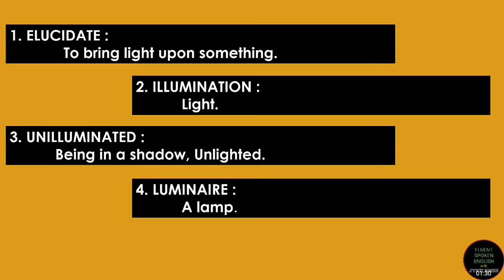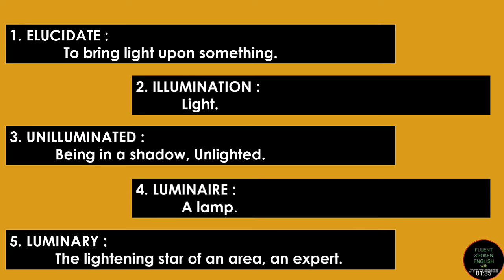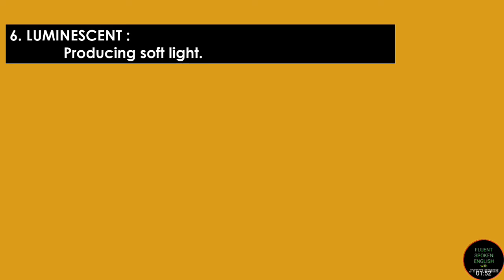'Luminaire' — a lamp is called a luminaire. 'Luminary' — the lighting star of an area or an expert is known as a luminary. Luminary does not only mean a lighting star; anybody who is an expert in his or her area can also be called a luminary. As an adjective, next is 'luminescent,' which means anything which is producing soft bright light.